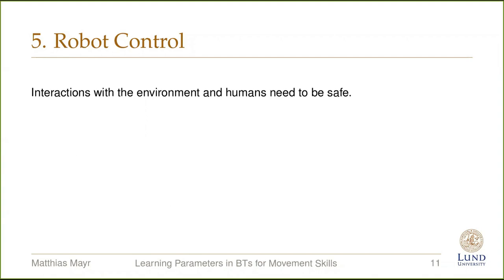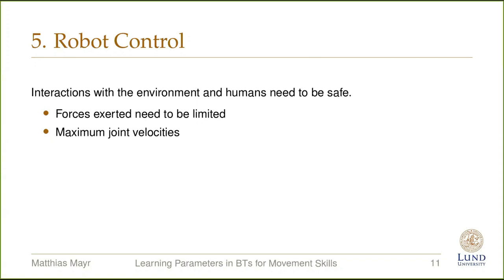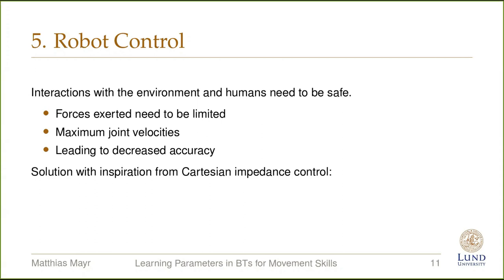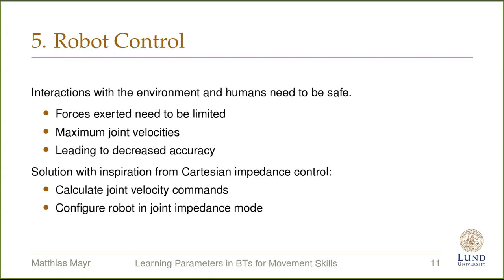Interactions with the environment and human operators need to be safe. Therefore, the forces exerted by the robot need to be limited and maximum joint velocities need to be adhered. However, this leads to a decrease in accuracy, which makes tasks on a millimeter scale more challenging. Following these requirements, our control solution is chosen with inspiration from Cartesian impedance control, but instead of commanding joint torques directly, we send joint velocity commands. On the robot, we configure joint impedance mode to ensure that no large forces can be applied.